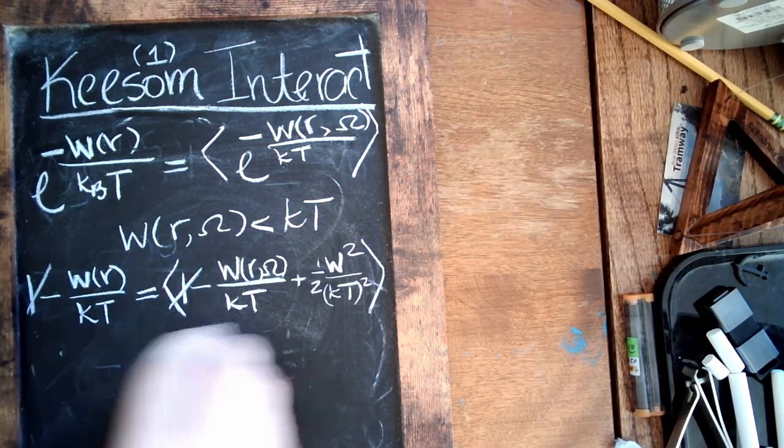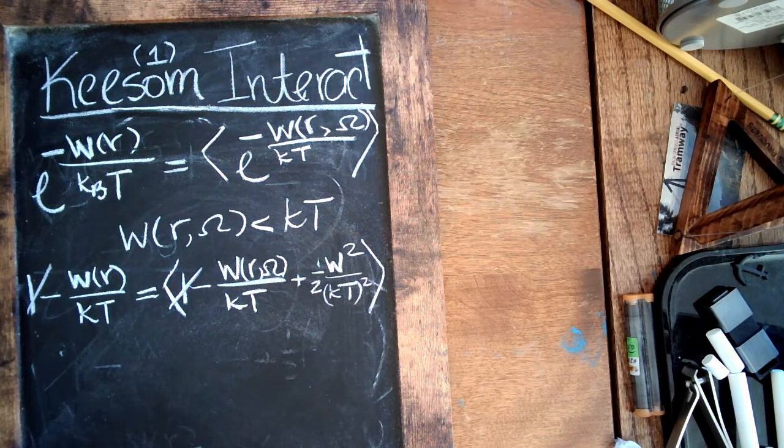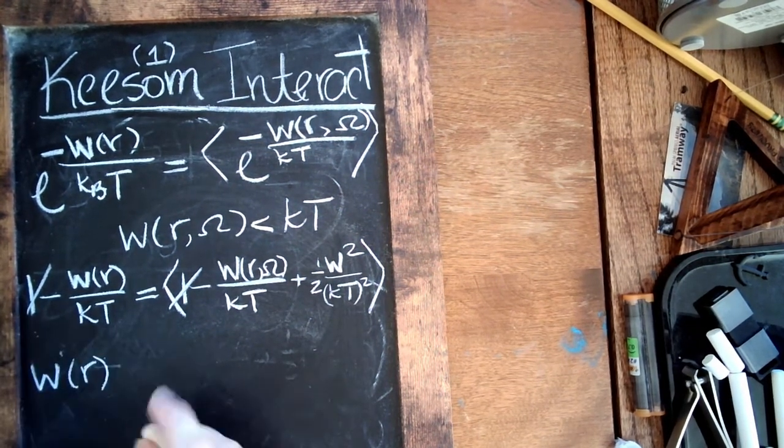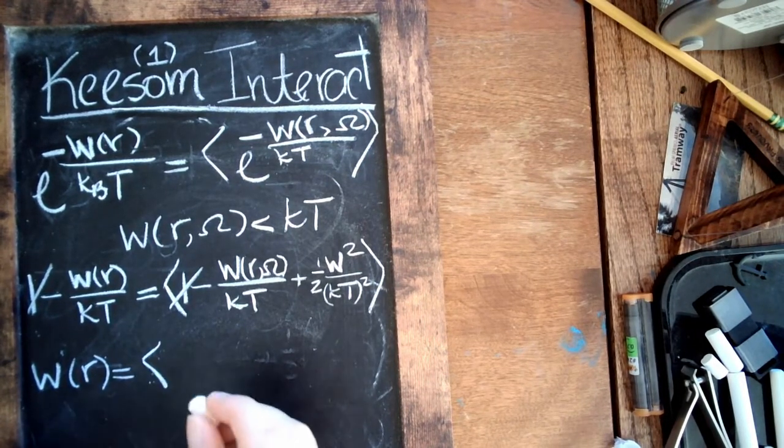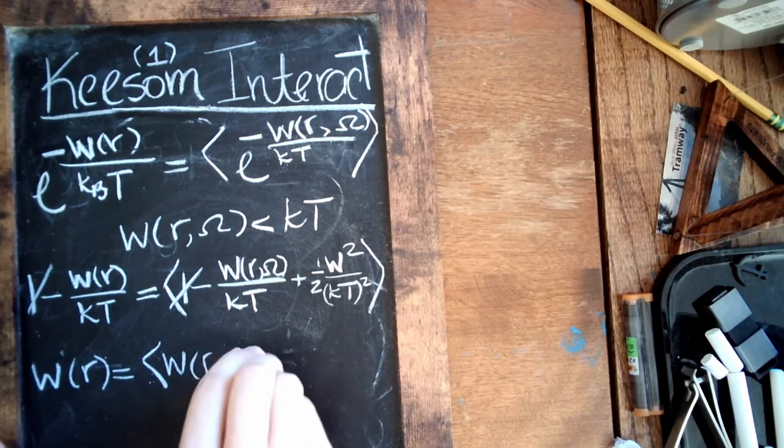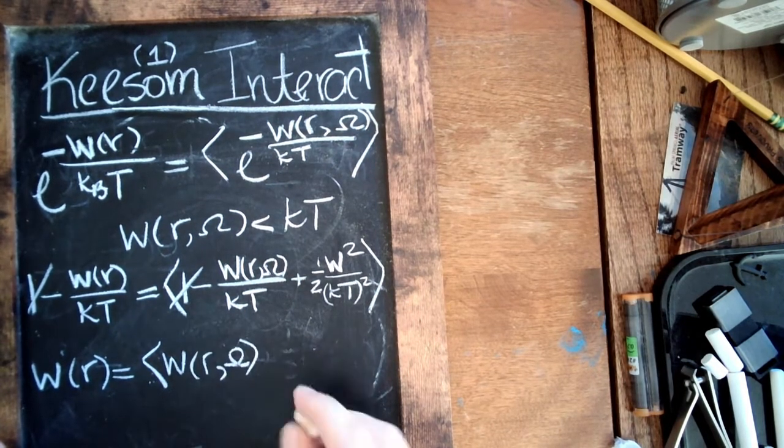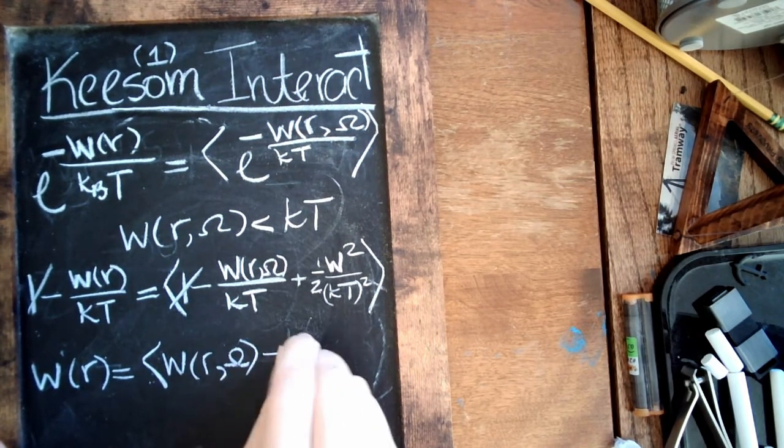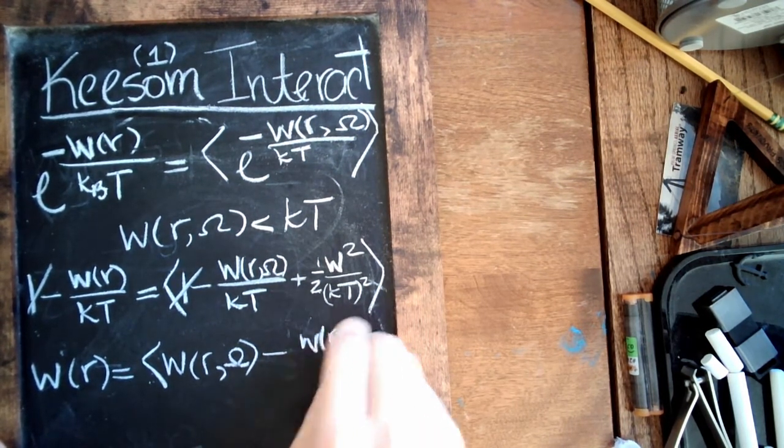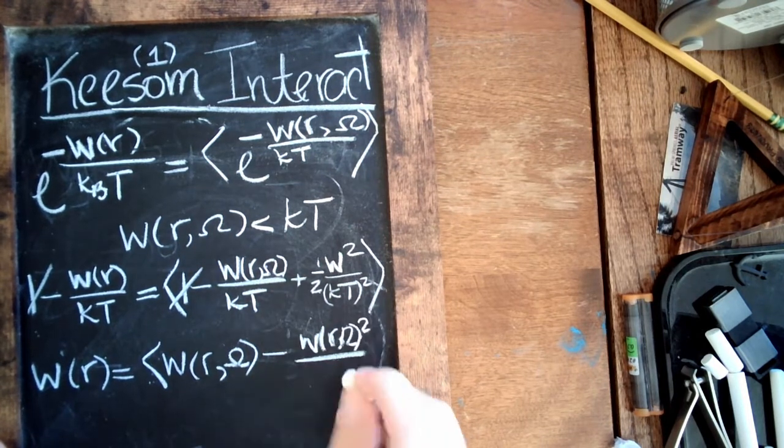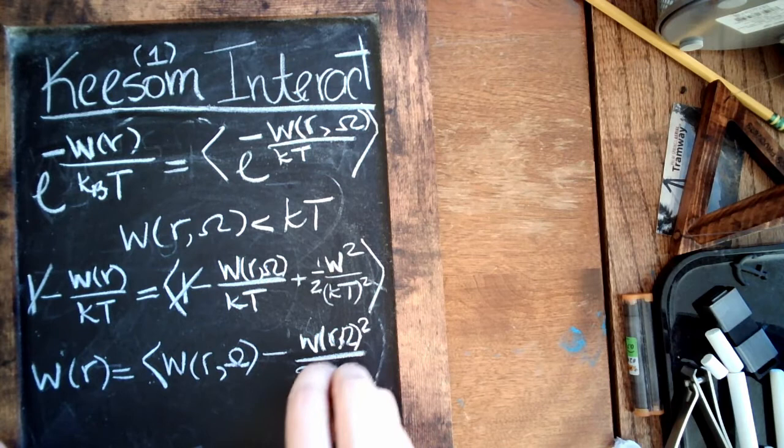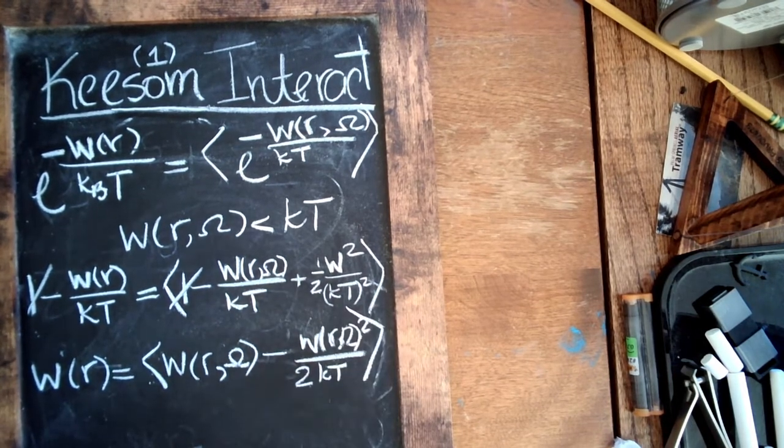So what we can do here is cross out the ones, since obviously one averages to just a regular one. Multiply through by minus kT, and we'll see what we're left with. So the W(r) is equal to the average of W(r,omega) minus W(r,omega) squared over 2kT. And again, we're truncating after second order.